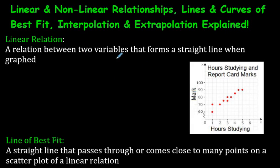A linear relation is a relation between two variables that forms a straight line. So the word line means it's going to be a straight line. In this case here, we have two variables, and what they mean by variables here are two things that are related to each other. In this case, this is the people's mark, and down here is how many hours they studied. The title here is hours studying and report card marks.